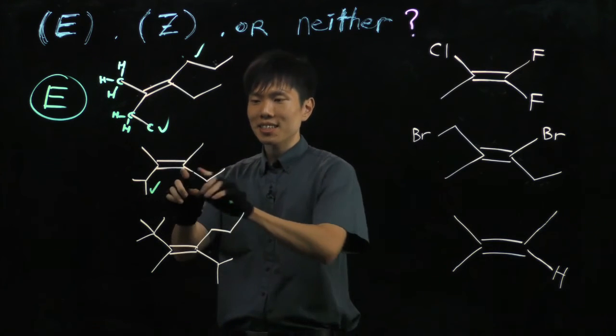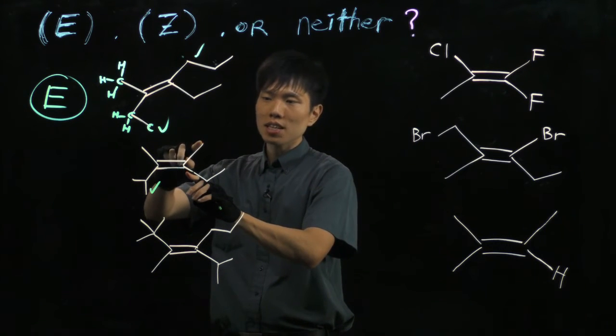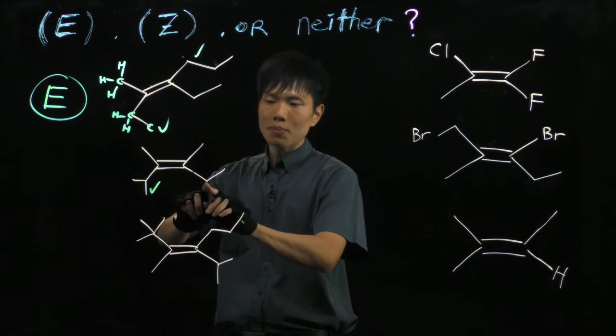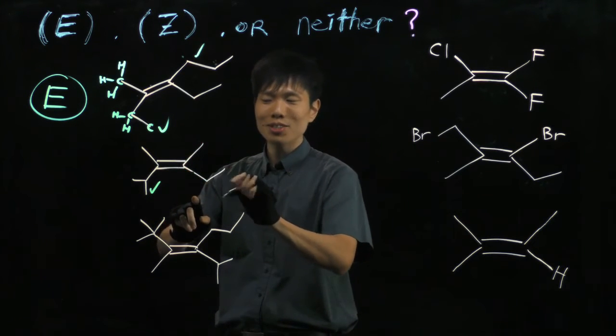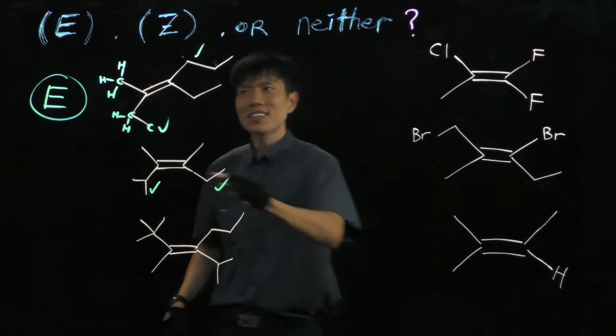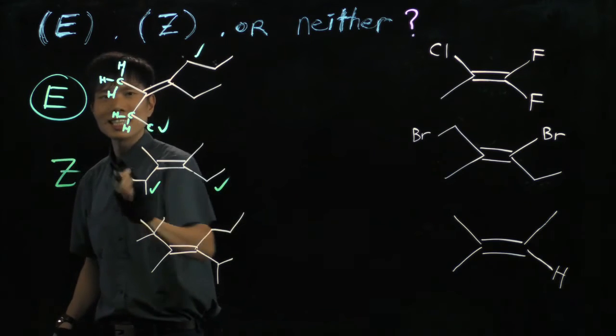On the other side, same thing, methyl group C ends with HHH at the bottom. Ethyl group, carbon, HH and a carbon, high priority. So the same high priority on the bottom side. So we call it Z.